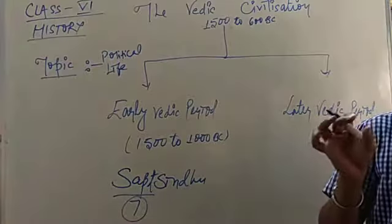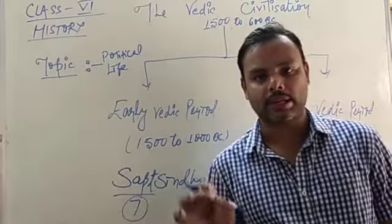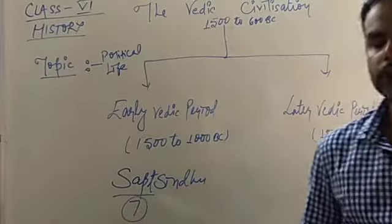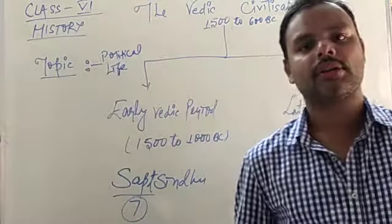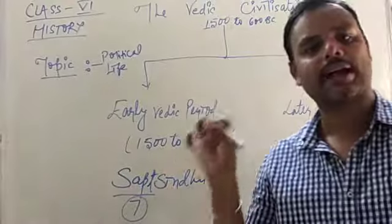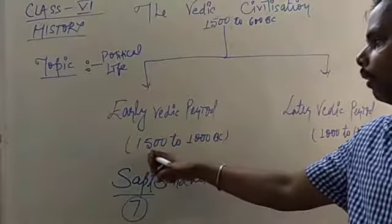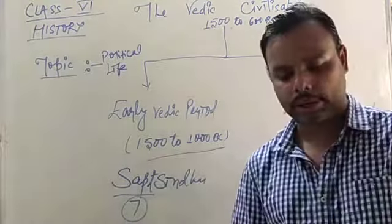Out of these, the Rig Veda is the oldest Veda. We call early Vedic period as Rig Vedic age because Rig Veda was composed at that particular time, from 1500 to 1000 BC.